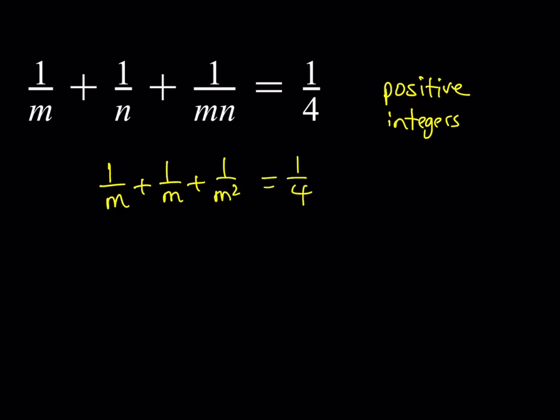You get 1/m + 1/m + 1/m² = 1/4. And then from here 1/m², so you can go ahead and make a common denominator. This is going to be 2/m, and if you go ahead and multiply that by m here, you'll get 2m/m². Basically, and then after you do the cross multiplication, you're going to get m² = 8m + 4.